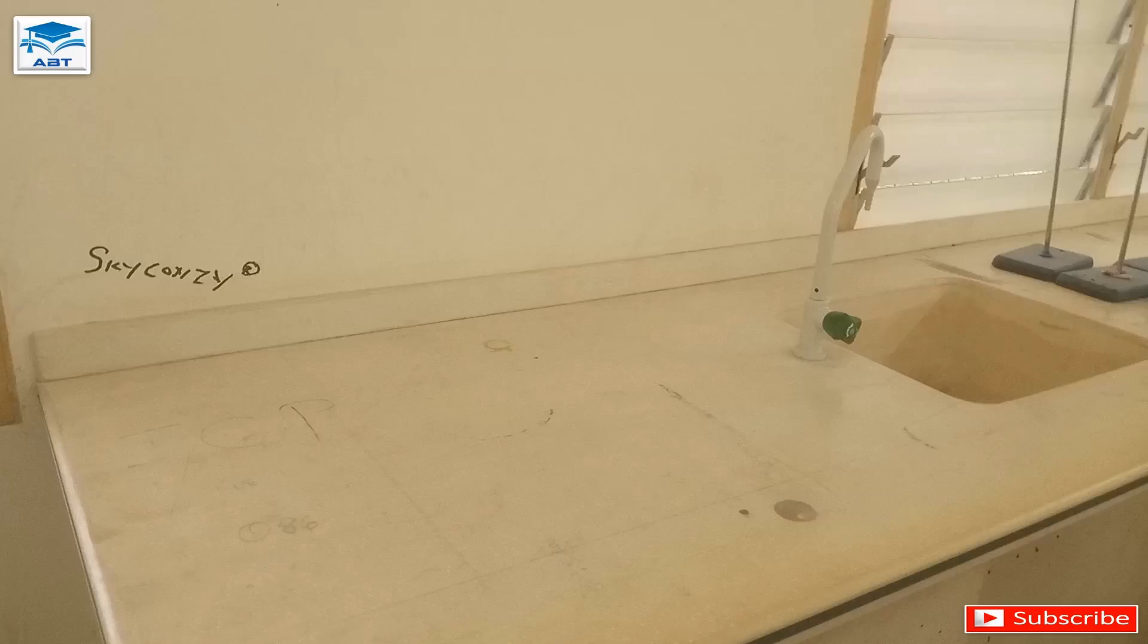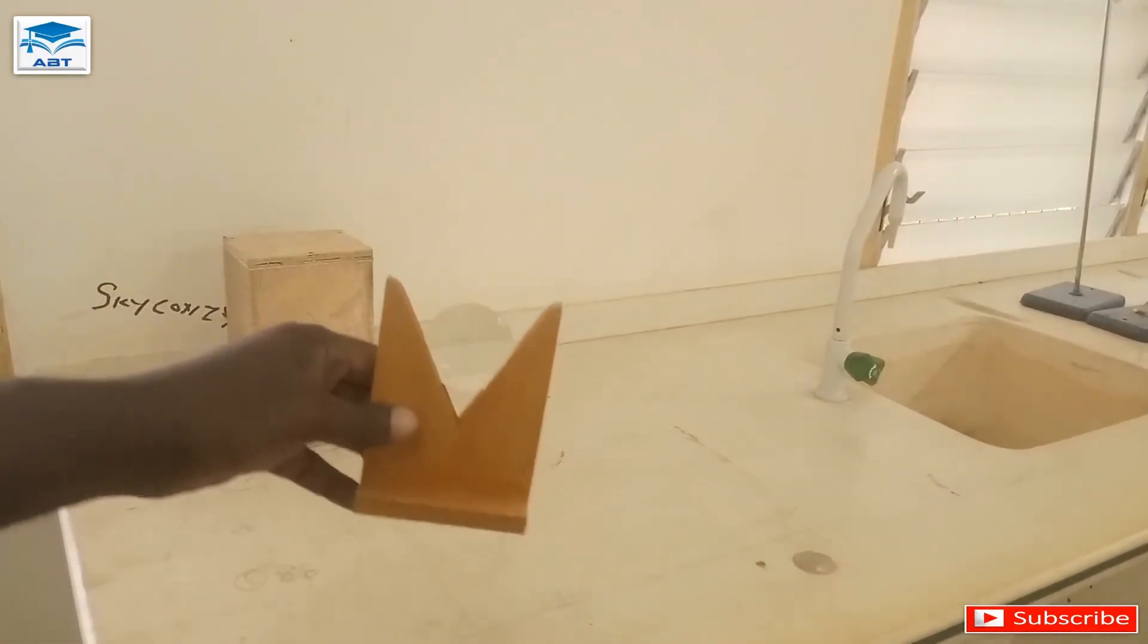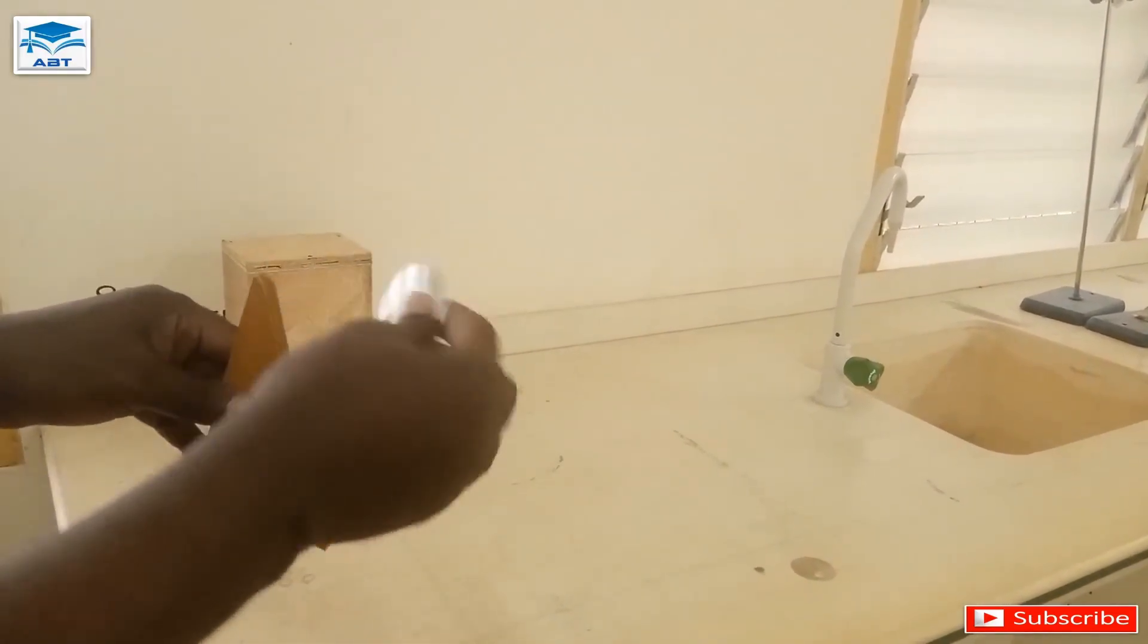Hello and welcome to Alpha Beta Tutorial. In this video, we are going to conduct a simple experiment to determine the focal length of a converging lens. The apparatus needed for this experiment are a converging lens and its holder, a screen, and a meter rule.